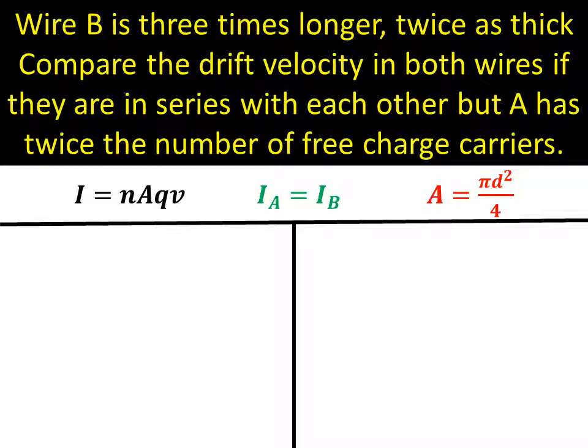Now, it's a bit sneaky here, and you've got to watch out for this. They've told you that wire B is twice as thick as wire A. While thickness is measured in meters, it's the diameter. It's not the area. So we don't actually have the area. So we're going to need to use the formula for area, which is π d squared over 4. And we get that from π r squared.